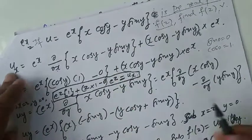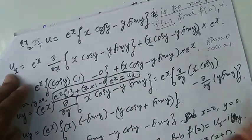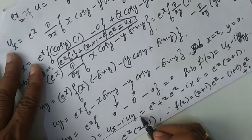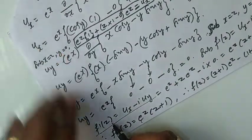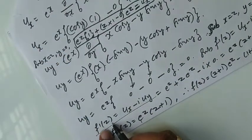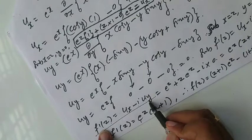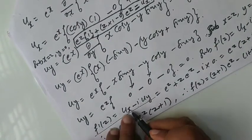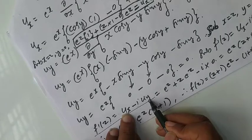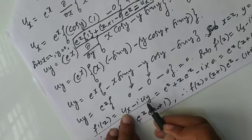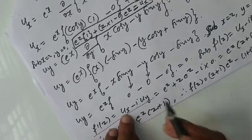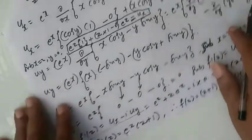Now, u is given. When u is given, you know the formula. The formula is f'(z) is equal to ux minus i into uy. From u, you are finding ux; from u, you are finding uy. Then substitute x equal to z, y equal to 0, and integrate — problem is finished.